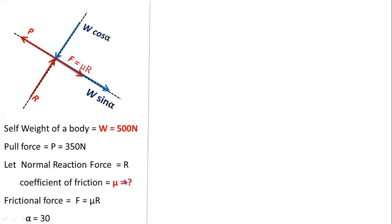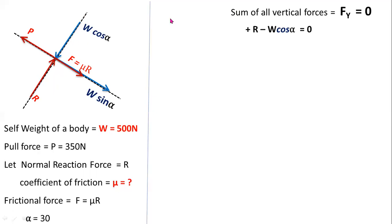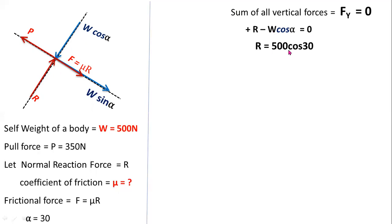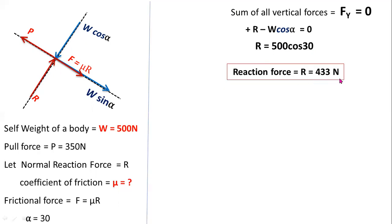For determining the normal reaction force, consider the sum of all vertical forces equal to zero. W cos alpha acts downward and R acts upward: minus W cos alpha plus R equals 0. So reaction force R equals W cos 30 degrees equals 500 cos 30 degrees equals 433 newtons.